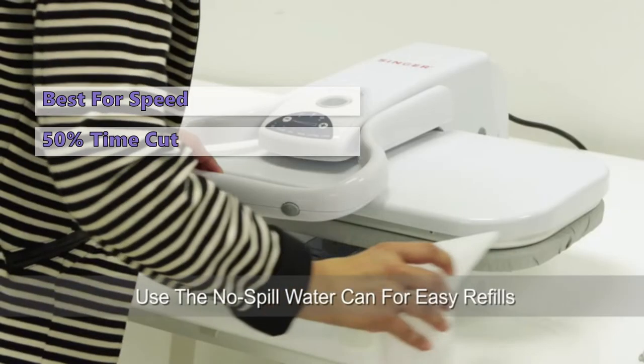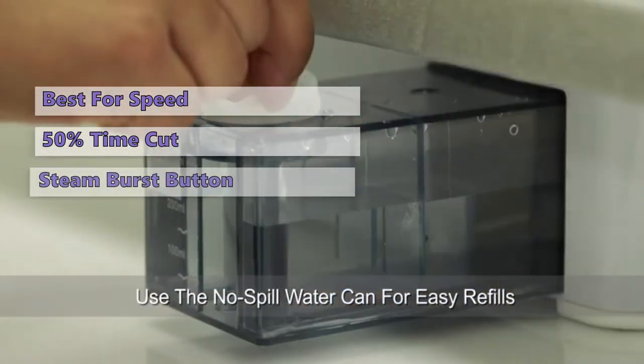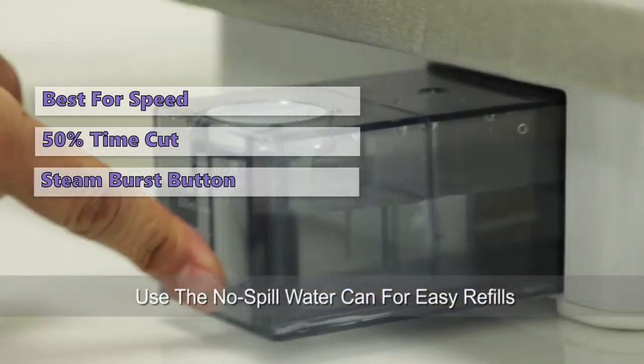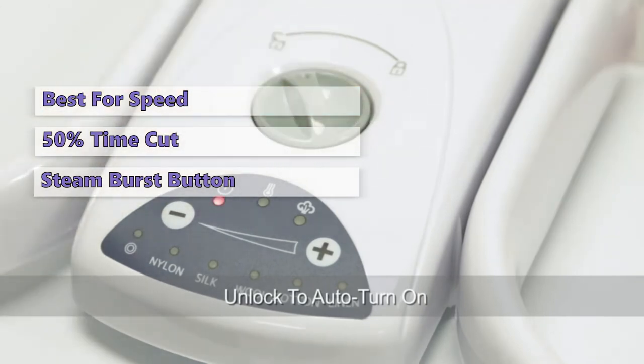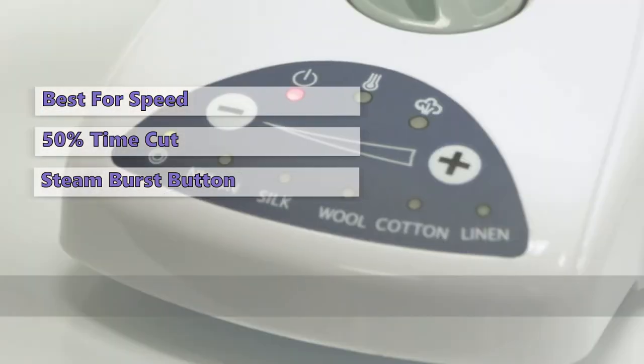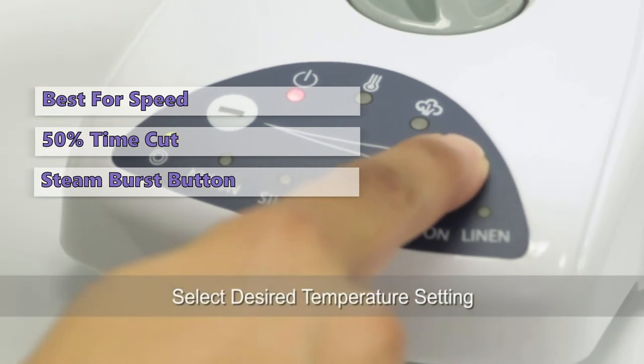Additionally, it has a built-in timer of up to 15 minutes. The unit comes with a steam burst button that you can press for two seconds to get a powerful burst of steam. You can adjust the temperature on this one via the control panel and you can also select your fabric type by pressing a button.